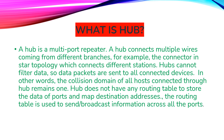Hub cannot filter data, so data packets are sent to all connected devices. When data is received, it does not filter the data — it basically sends all data packets to all nodes. This is a disadvantage of hub. In other words, the collision domain of all hosts connected through the hub remains one. Hub doesn't have any routing table to store port data and maps, so data packets flow to multiple devices.